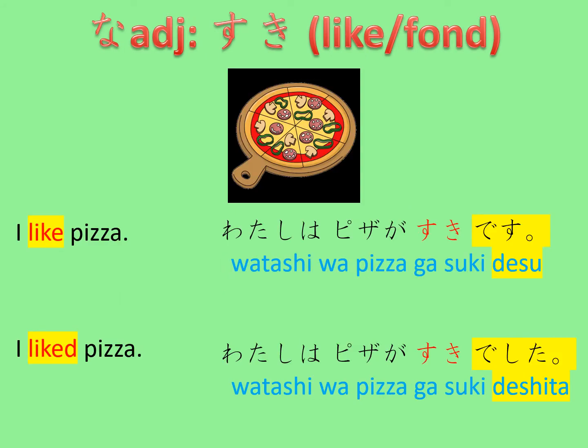Some English verbs, like 'like,' are translated with an adjective in Japanese — in this case, suki. And as suki is a na-adjective, it follows the same rule. 'I like pizza' is 'watashi wa pizza ga suki desu,' and in order to change that into 'I liked pizza,' you need to say 'watashi wa pizza ga suki deshita.'